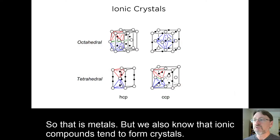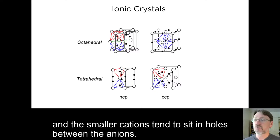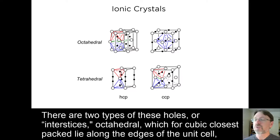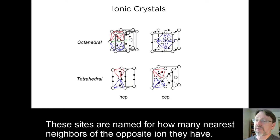So that's metals. But we also know that ionic compounds tend to form crystals. Usually because they are larger, the anions tend to form a closest packed array, either cubic or hexagonal. And the smaller cations tend to sit in holes between the anions. There are two types of these holes, or interstices. Octahedral, which for cubic closest packing lie along the edges of the unit cell, and tetrahedral, which for cubic closest packing lie in each octant of the body of the unit cell. These sites are named for how many nearest neighbors of the opposite ion they have.